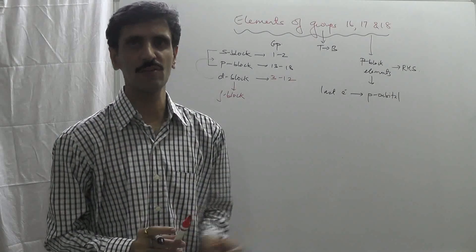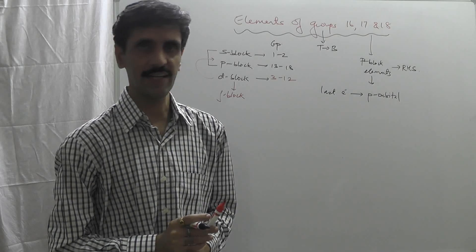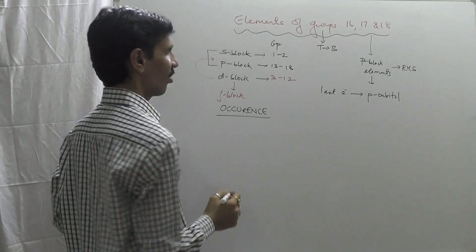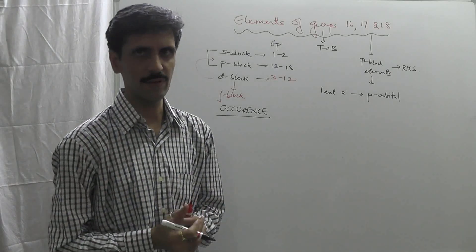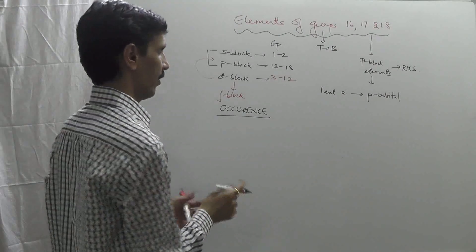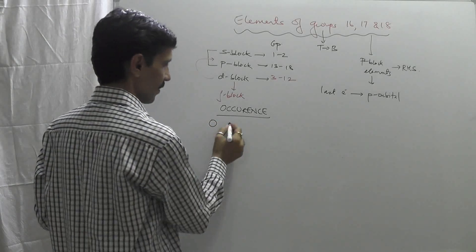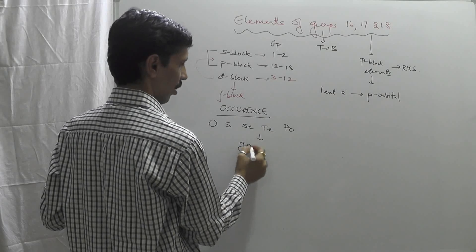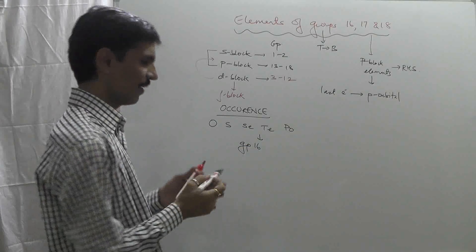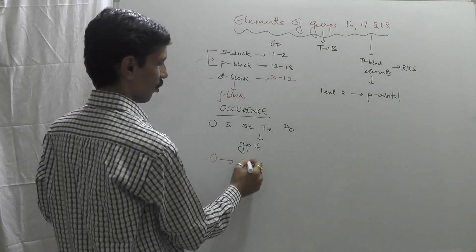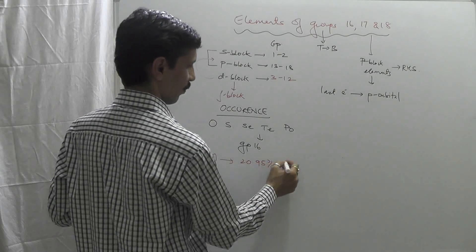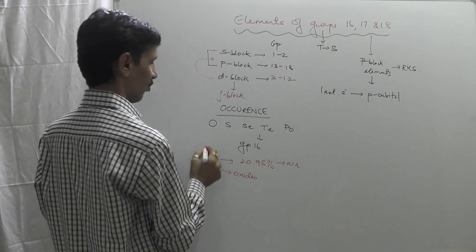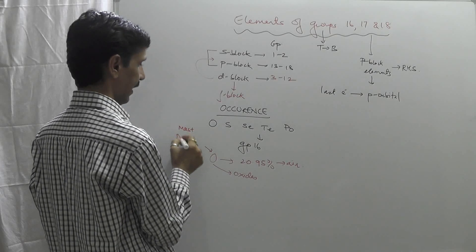We will now consider various aspects of elements of groups 16, 17, and 18. We start with the very first property — occurrence — how these elements occur. Beginning with group number 16: oxygen, sulfur, selenium, and polonium are the elements of group 16. Oxygen is present in air at around 20.95%, and also in the form of oxides. Oxygen is one of the most abundant elements existing in higher proportion in the atmosphere as well as in the Earth's crust.